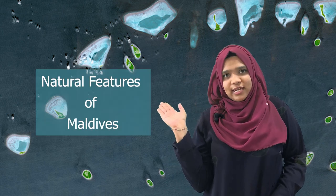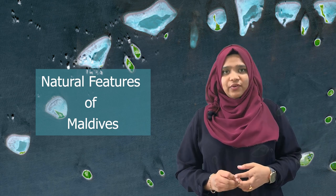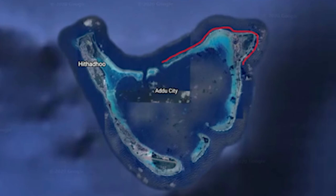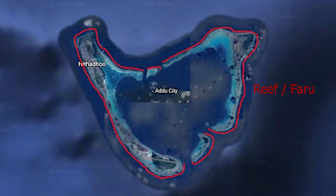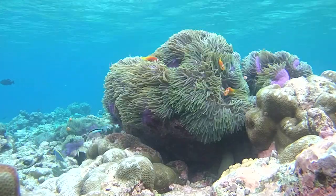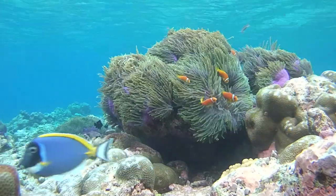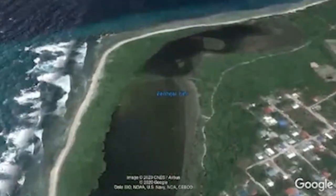Now that we are familiar with the geography of Maldives, let's move on to the natural features of our country. You already know there are 26 naturally occurring atolls. But what is an atoll? An atoll is a group of islands surrounded by a coral reef. An island is a piece of land. The atolls are surrounded by coral reefs, which is also known as Faru. A reef is a bar of rocks, sand, and corals which lays beneath the surface of the water.